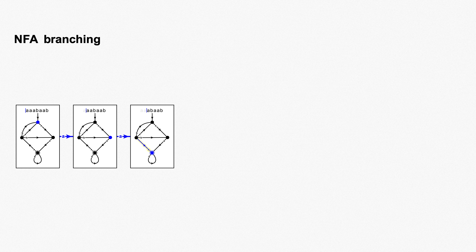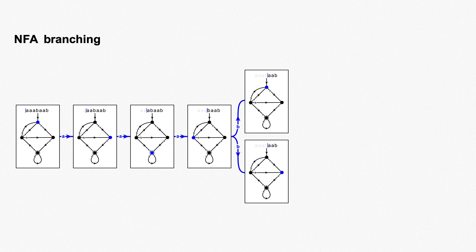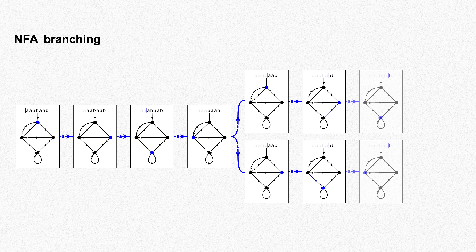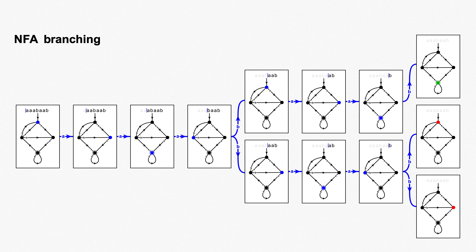We see no branching at all for the first three As. We split to two branches on the first B, and the states of the branches rotate around on the next two As. We add a branch again on the last B, giving us three total branches. One of these branches ends at an accept state, so our NFA accepts the string AAAB.